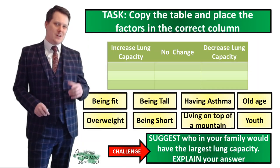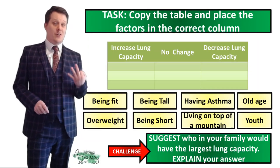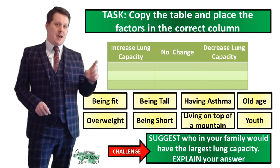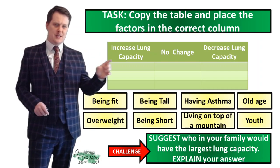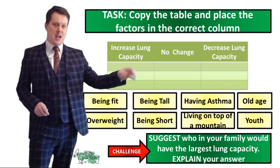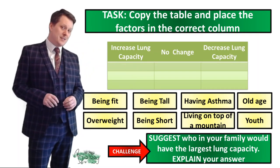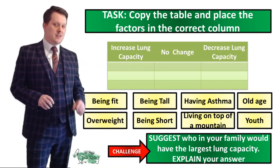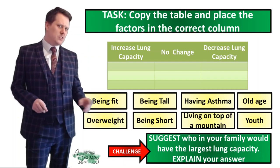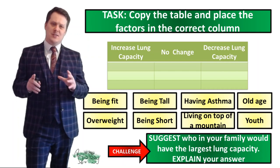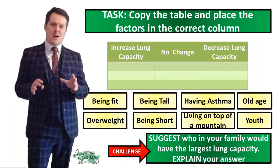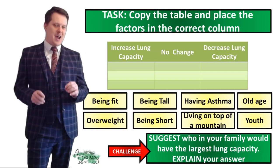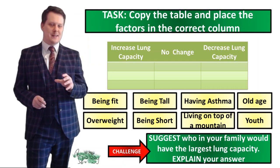Copy this table — it has three headings going four lines down: 'Increased Lung Capacity', 'No Change', and 'Decreased Lung Capacity'. Once you've completed your table, place these eight things under the correct heading. For a challenge, suggest who in your family would have the largest lung capacity and explain your answer with a reason.